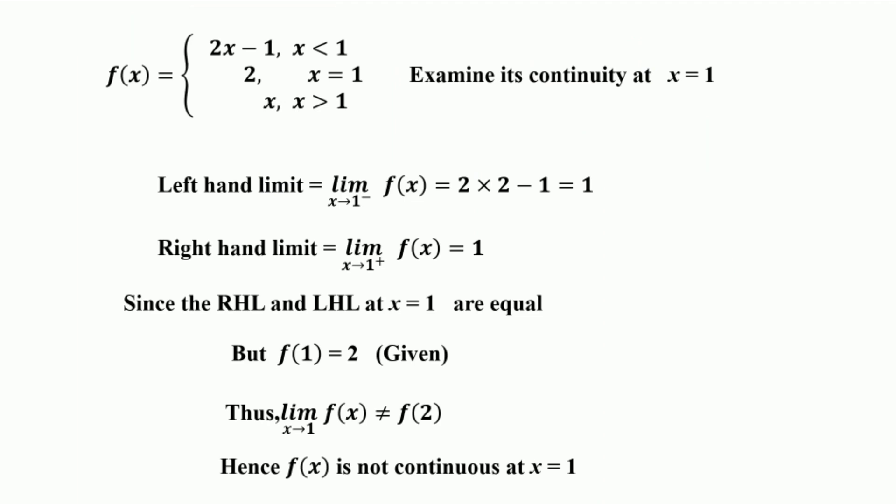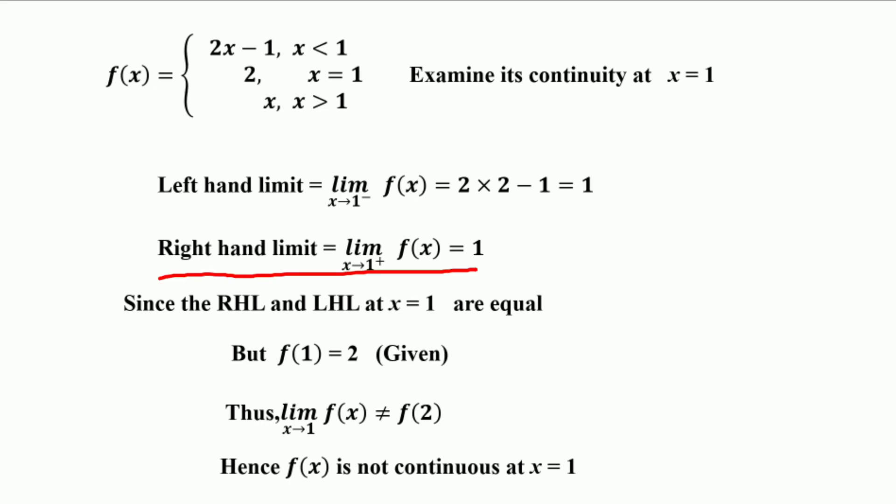The left-hand limit is: limit of f(x) as x approaches 1 from the left = 2x − 1 = 2(1) − 1 = 1. The right-hand limit is: limit of f(x) as x approaches 1 from the right = x = 1. Since the left-hand limit and right-hand limit at x = 1 are equal, the limit of f(x) exists at x = 1.